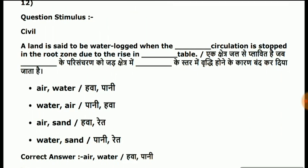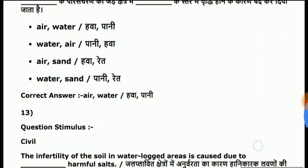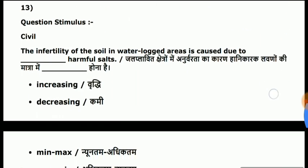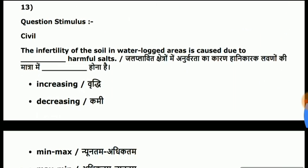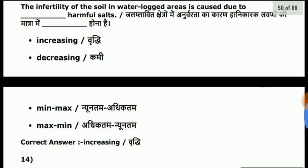First blank is air and second is water. The infertility of the soil in waterlogged areas is caused due to increasing.